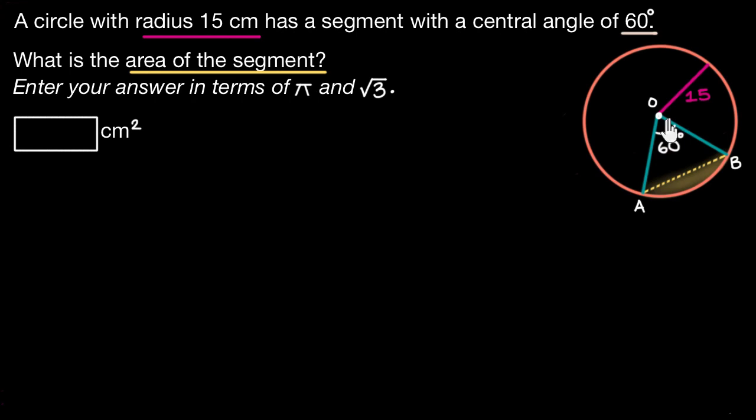Here in this circle we have the sector OAB right over here. This region is a sector as it is bounded by 2 radii and this arc of our circle. And if we look closely we can see that this sector is actually made up of this triangle OAB which is right over here and this segment over here. So in order to figure out the area of our segment what we can do is we can subtract this triangle from our sector and we will be left with this segment.